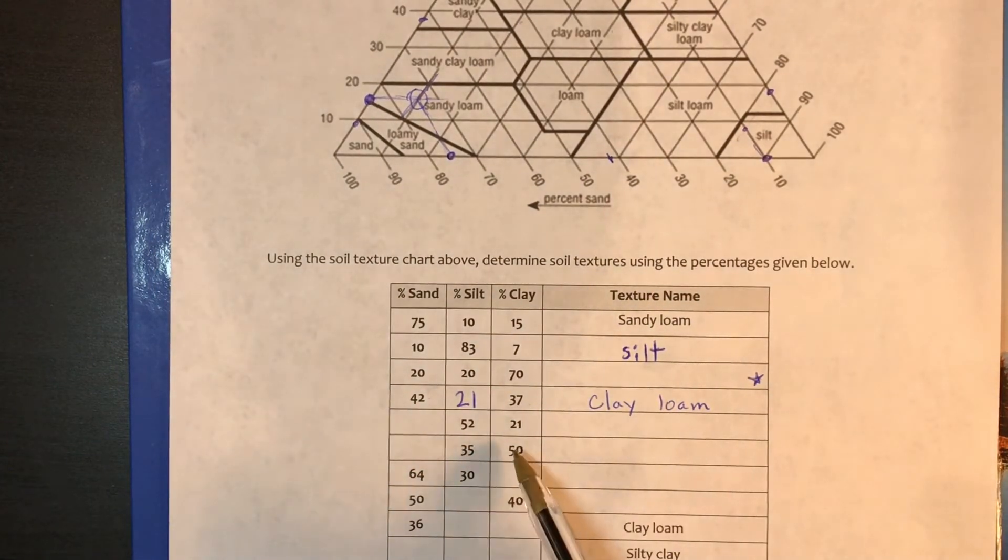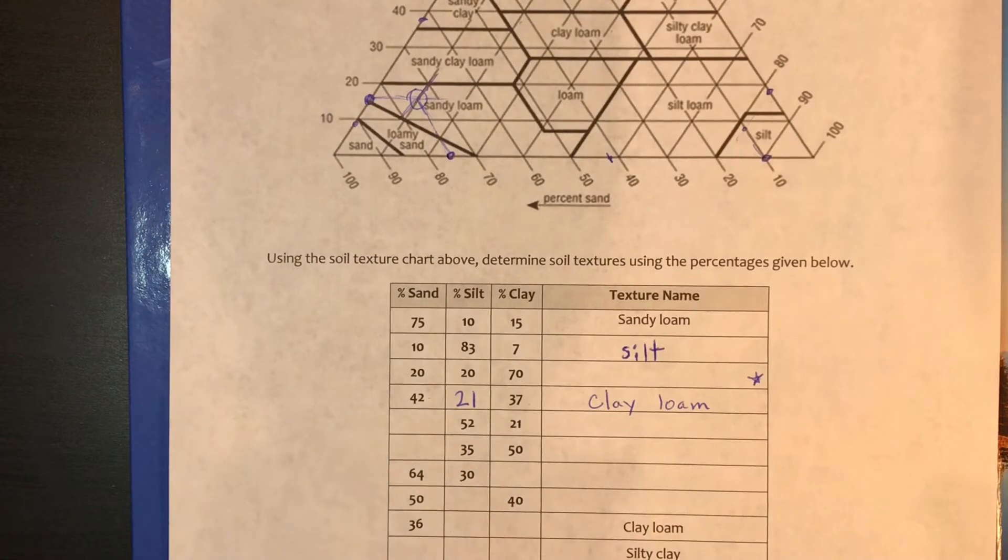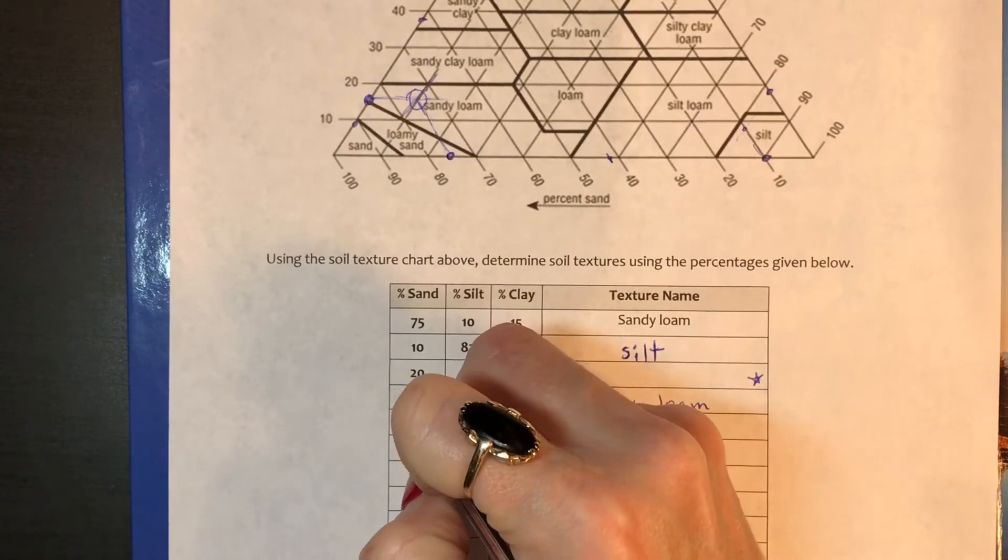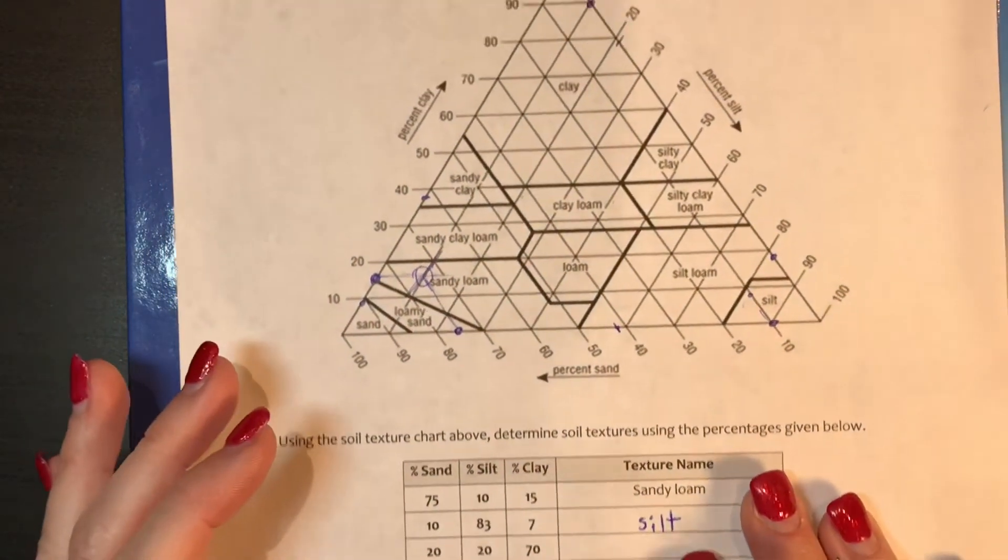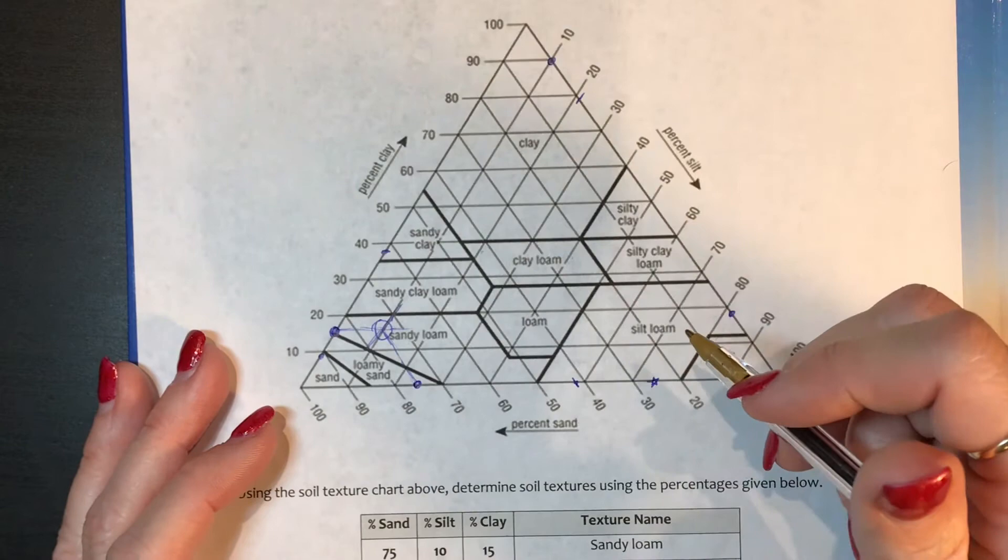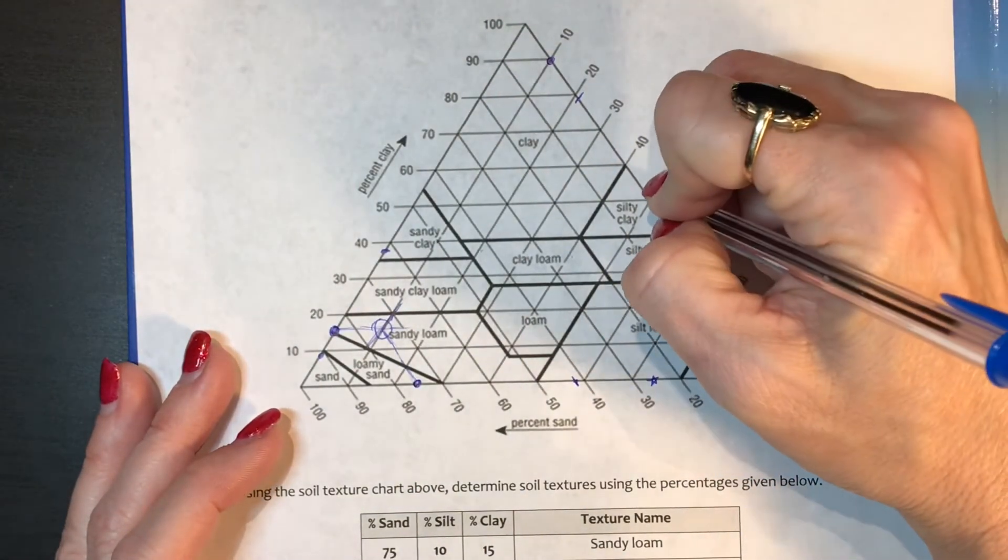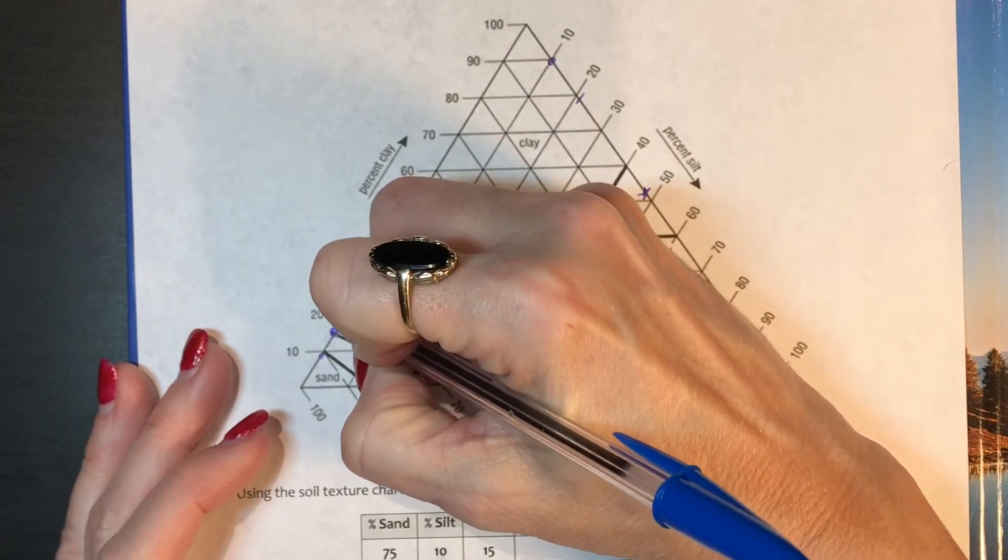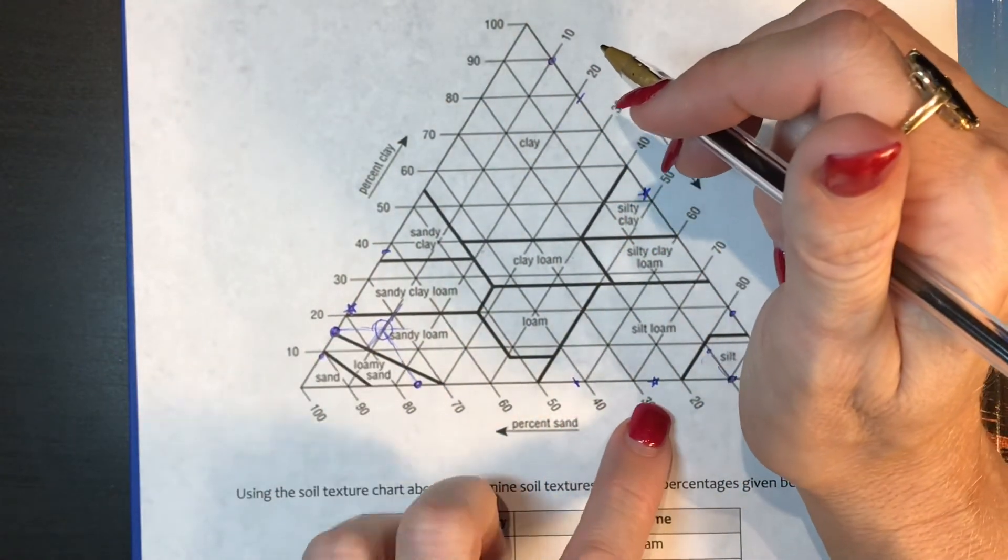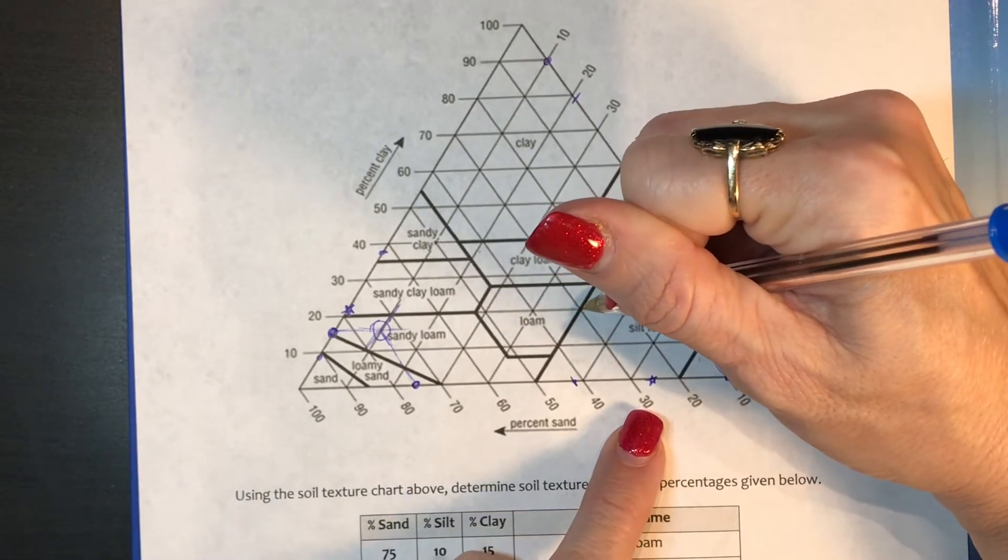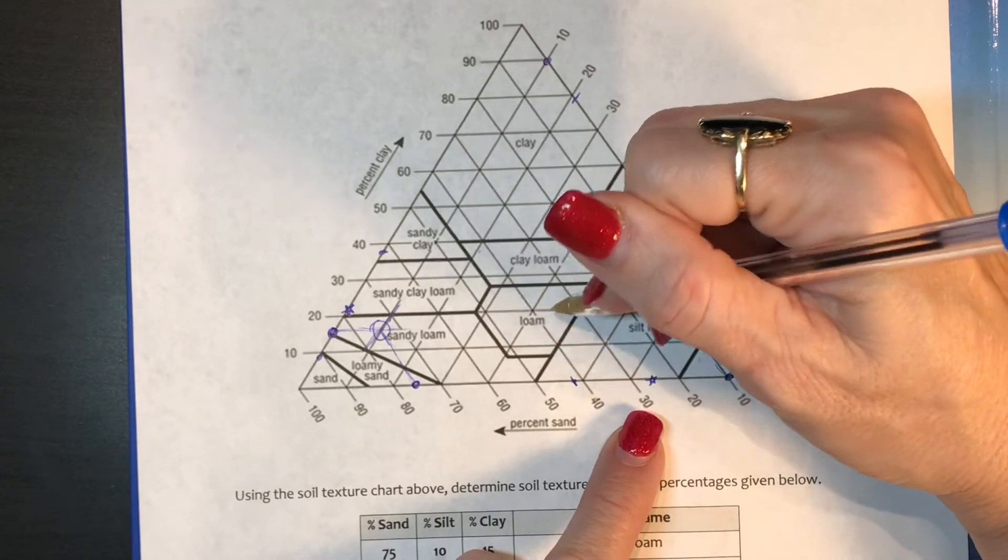Let's do one more. If you have 52% silt, 21% clay, how much sand do you have? 52 plus 21 is 73, which means this is going to be 27. So you have 27% sand, which is going to be right here, 52% silt, which is going to be right here, and then 21% clay, which is going to be right here. Where those three things meet together, it is going to be in the loam area.